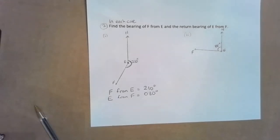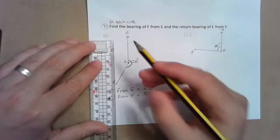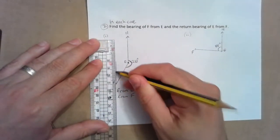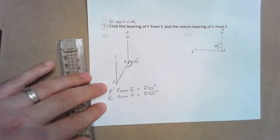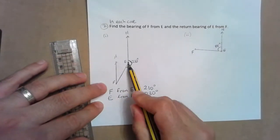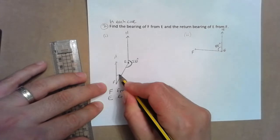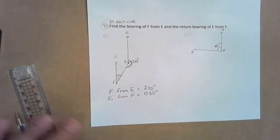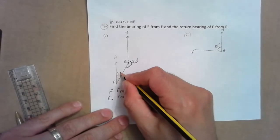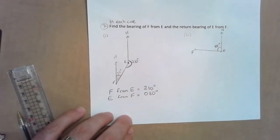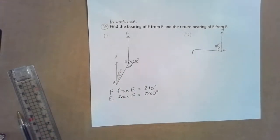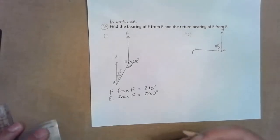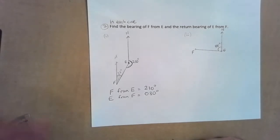What that means is: if I draw a north line at F and go from F to E, that turn there is 30 degrees. So we're just adding 180 or taking away 180 for return bearings once you know one of them.